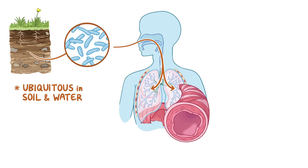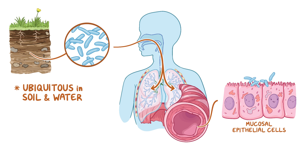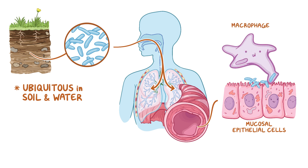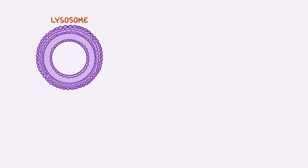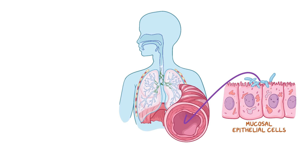Once inside the body, they adhere to mucosal epithelial cells in the respiratory tract and infect the macrophages that try to destroy them. Macrophages try to break down the MAC organisms inside an intracellular organelle called a lysosome, which contains digestive enzymes. However, MAC has unique antigenic lipids called glycopeptolipids, or GLPs, which are found on the surface of the cell. These GLPs act as a protective barrier against lysosomal enzymes, allowing the bacteria to survive and multiply inside macrophages.